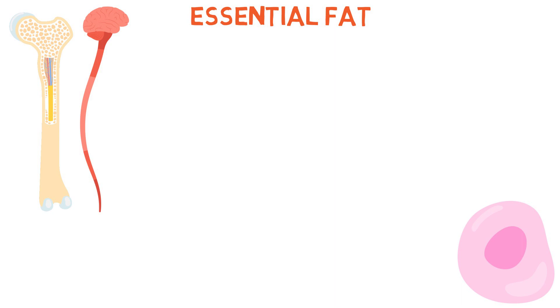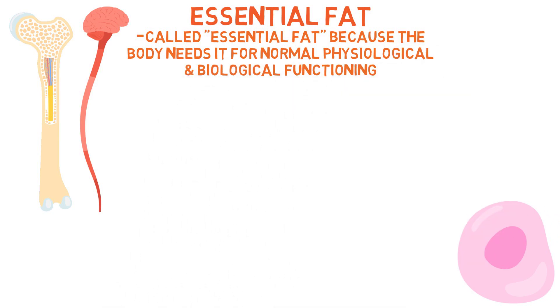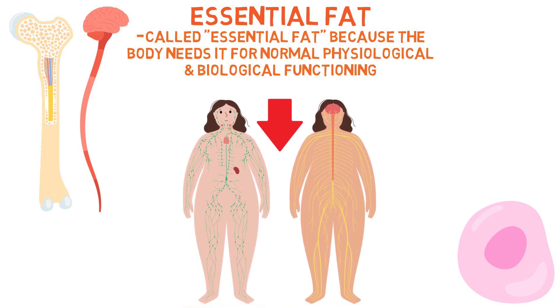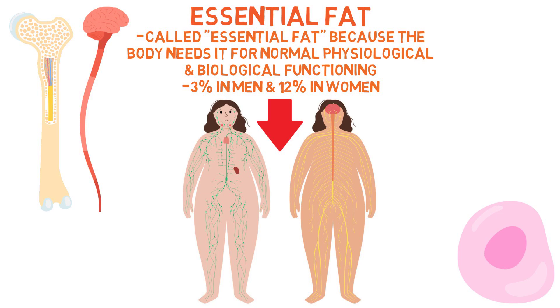Essential fat tissue is found in bone marrow, the brain, the spinal cord, and cell membranes. It's called essential fat because the body needs it for normal physiological and biological functioning. Without it, the body would not function properly, with entire systems like the immune and neurological systems being negatively affected. The average percentage of essential fat in body composition is 3% in men and 12% in women, with women typically having higher levels due to the demands of childbearing.